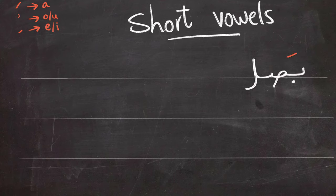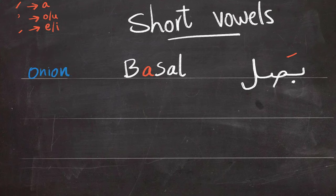Let's have some examples to see how these short vowels work in a real word. The first example that we're going to talk about is basal. It means onion. Notice how we say Ba. And it even comes back in how we spell it in English, Ba.